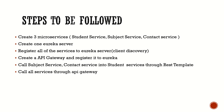Let me outline the steps I am going to follow to develop this course. I am going to create three microservices: student, books, and library. I will create one Eureka server and register all the services to it. Then I will create an API gateway and register it to the Eureka server. Finally, I will call the book and library service inside the student service through RestTemplate, and call all the services through the API gateway.